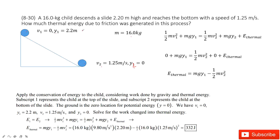We input the known quantities. V1 is 0, and Y2 is 0. So we can get the thermal energy is just M·g·Y1 minus one-half·M·V2 squared. Y1 is given, V2 is given, and mass is given, so it is straightforward to get the final answer for the thermal energy.